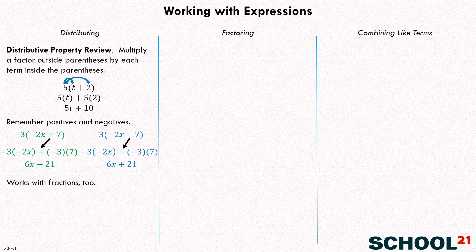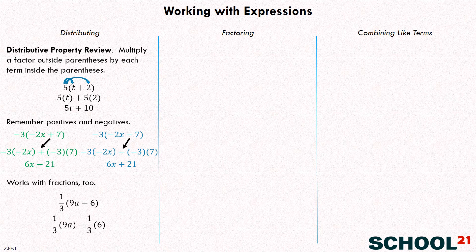So now let's work with fractions in distributing. What would be one third times the quantity nine A minus six? We distribute the one third: one third times nine A, minus one third times six. What's one third times nine A? Nine thirds, or three A. And then minus — what's one third of six? Six thirds, or two. So the answer is three A minus two.